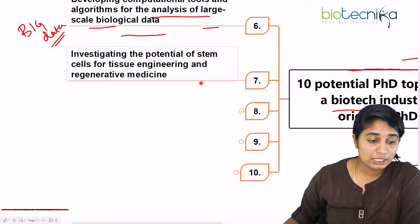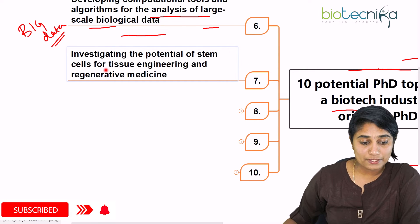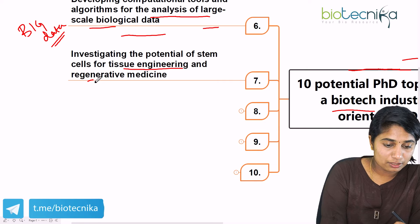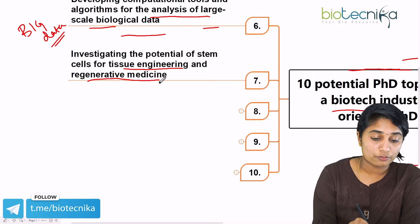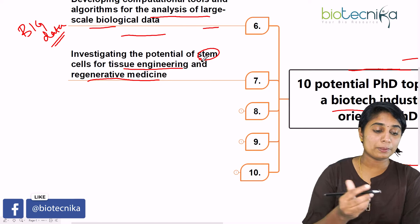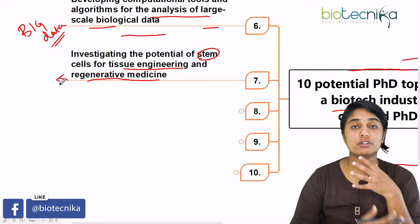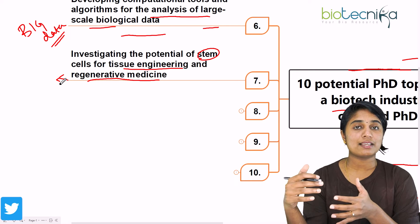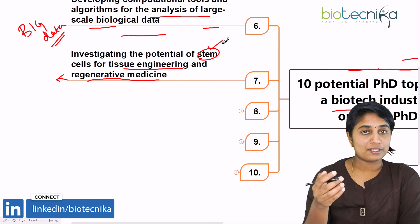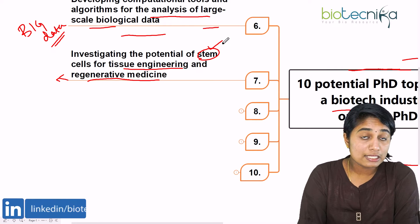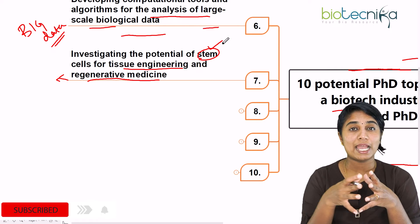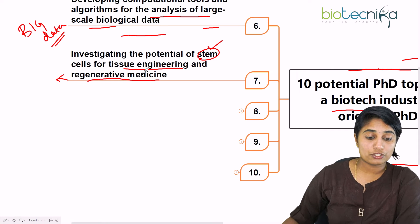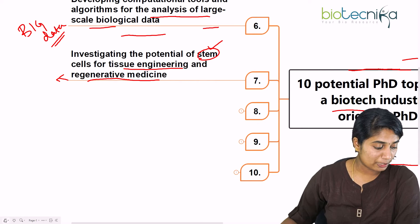The seventh topic is investigating the potential of stem cells for tissue regeneration, tissue engineering, and regenerative medicine. Regenerative medicine means using stem cells to replace diseased cells with healthy cells. If you're somebody interested in immunology and human health, then this is one topic you can take up — investigating the potential of stem cells for tissue engineering and regenerative medicine.